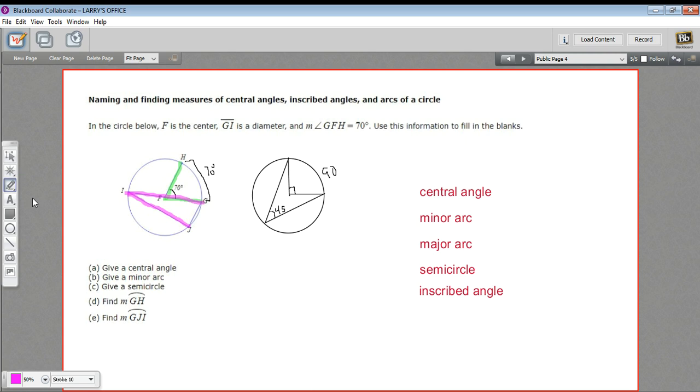There are some special names for arcs as well. When we're going around the outside of a circle here, if we name two points, that'll give us a minor arc. So if we said HI, that would be a minor arc.